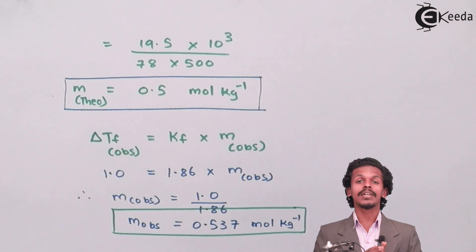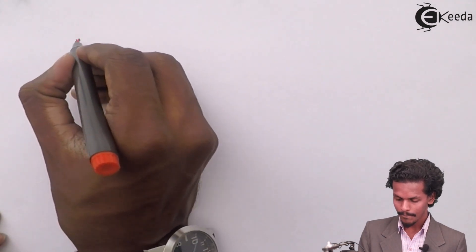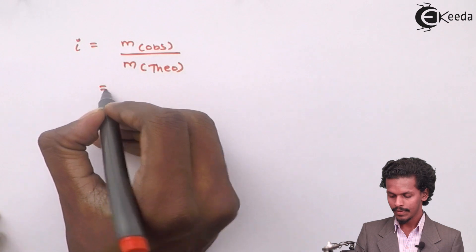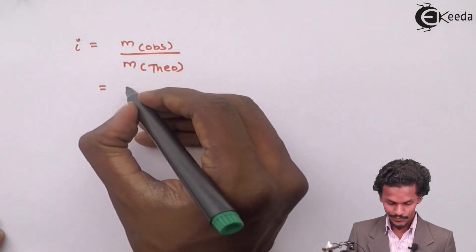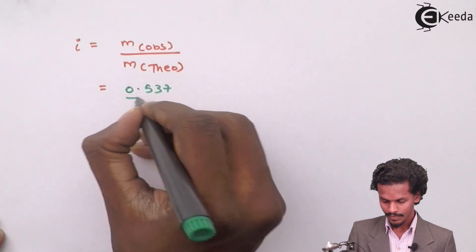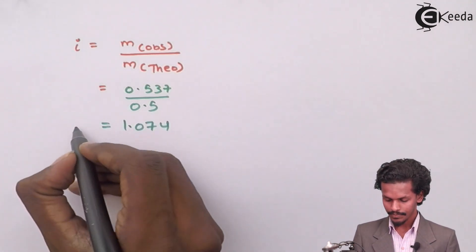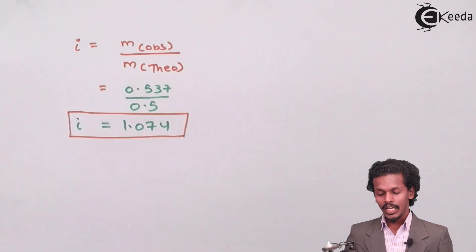Now we have both molality values. The Van't Hoff factor i equals the observed molality divided by the theoretical molality: i = 0.537 / 0.5 = 1.074. The Van't Hoff factor has been determined as 1.074, which is greater than 1.